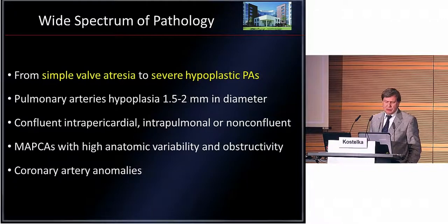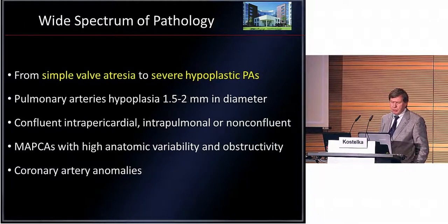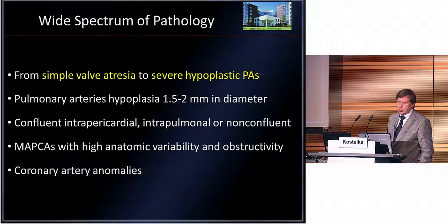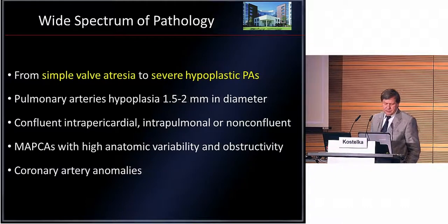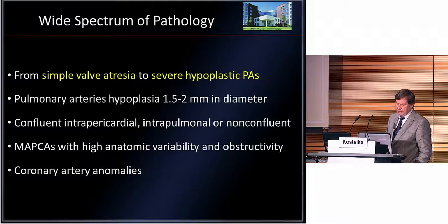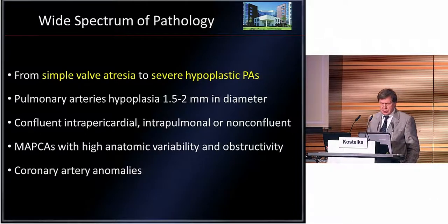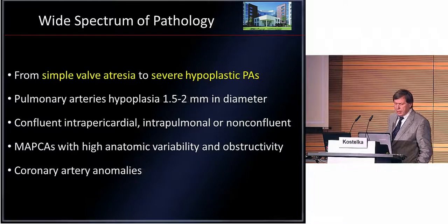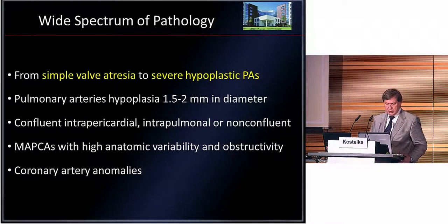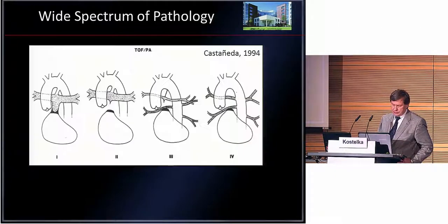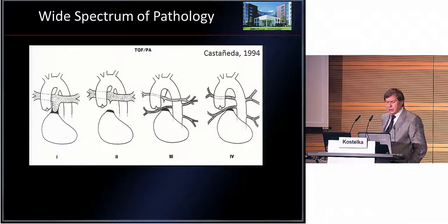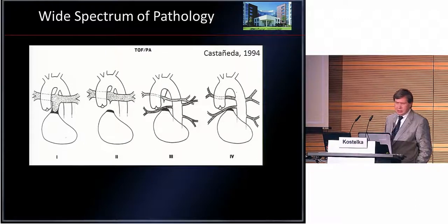The pulmonary arteries can be confluent, intrapericardial, intrapulmonary, or non-confluent. There is a vast majority of heterogeneity and variability in MAPCAs with different kinds of obstructivity. We already discussed coronary artery anomalies yesterday. For better understanding and better planning of surgical treatment, Castaneda introduced a division into four types, which you have already seen yesterday.